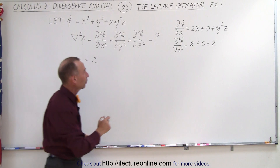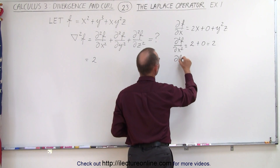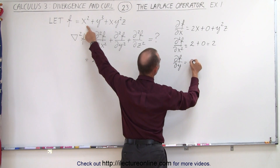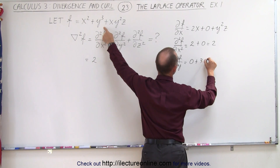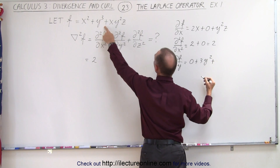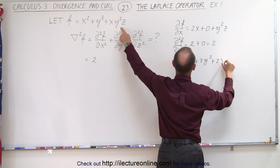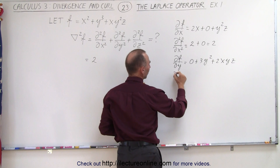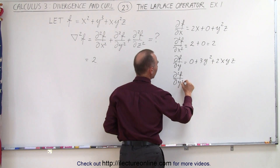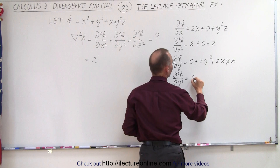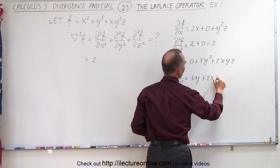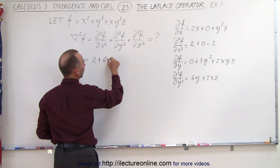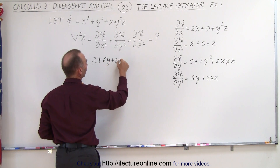For the second term, we take the first partial derivative of the function with respect to y, and that gives us 0 for the first term, 3y squared for the second term, and 2xyz for the third term. Now taking the second derivative with respect to y, that gives us 6y plus 2xz, which becomes plus 6y plus 2xz.